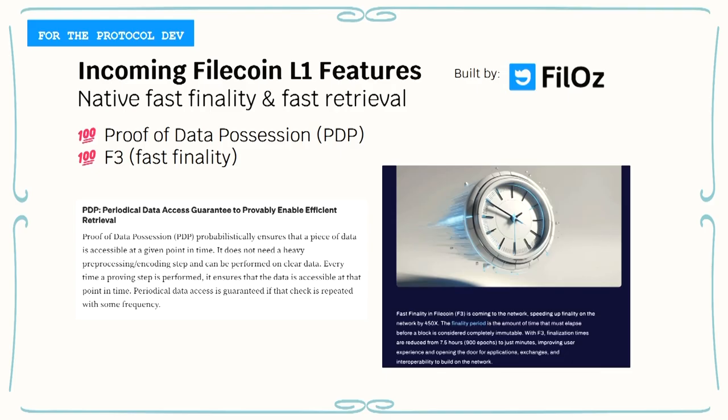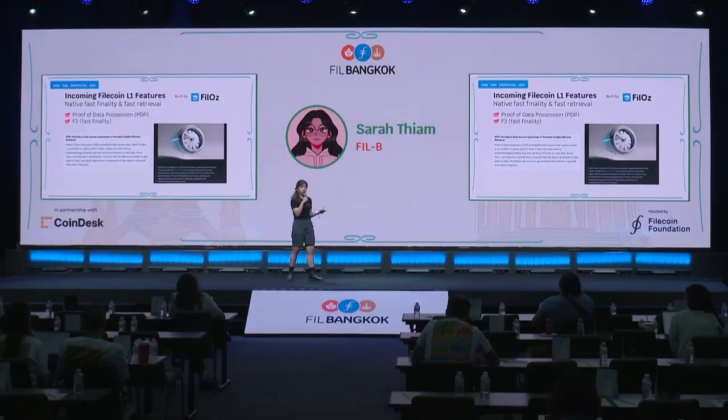For the protocol dev, we'd like to share some incoming improvements to the Filecoin L1. These are really big protocol changes coming in 2025. Two main things: proof of data possession as well as fast finality. For a long time, Filecoin builders have asked for fast retrieval. Filecoin does really well in the archival storage space, but it takes a little bit longer to retrieve data because it's mostly for really large pieces of data. That comes with proof of data possession, PDP — a new provider format where you store a proof showing that your data is unsealed and available to retrieve at any point in time.